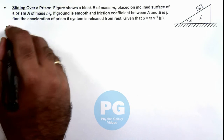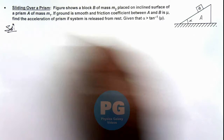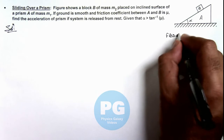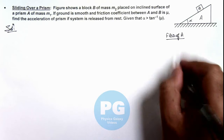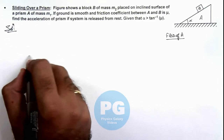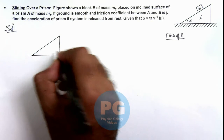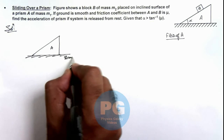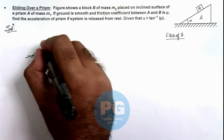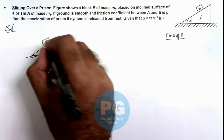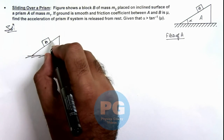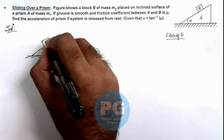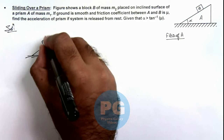First we draw the free body diagrams of bodies A and B. To draw the free body diagram of A, we draw the figure again showing all forces acting on it. Since the ground is smooth and B is sliding on the rough inclined surface, the normal reaction from the ground is N1 and the normal reaction between the two blocks is N2.